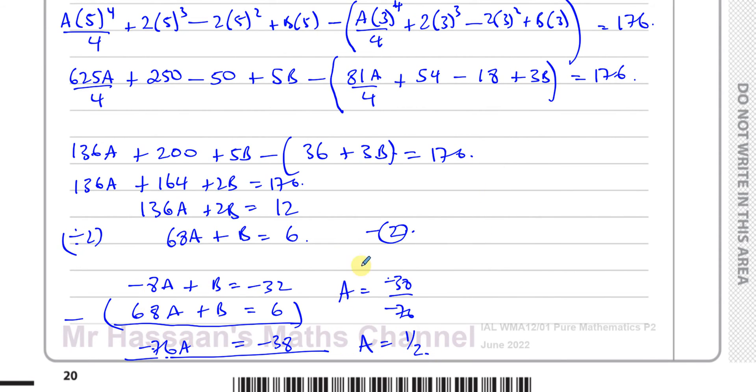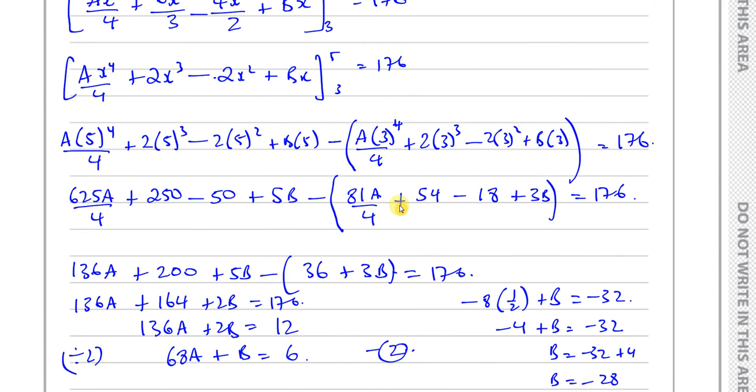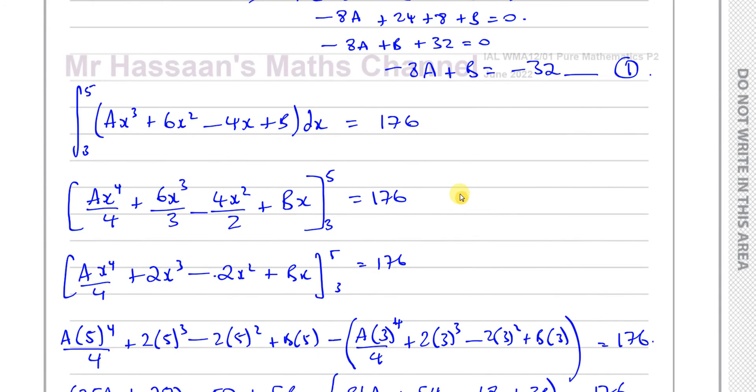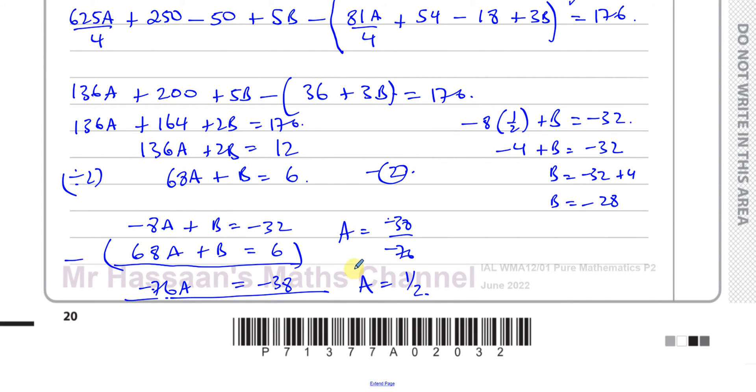And we can use this to find what b is. We now know -8 times a half plus b is equal to -32. So we can say that's going to be -4 plus b is equal to -32, so b is equal to -32 plus 4, so b is equal to -28. So we found the value of a and b. a equals a half and b equals -28.